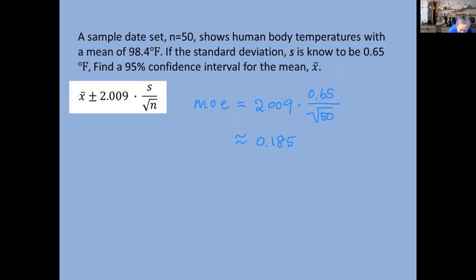What is the actual mean? 98.4, right. So now we are getting 98.4 plus minus the margin of error, 0.185. The confidence level will be, if you subtract, the lower bound is 98.215, and the upper bound will be, if added, 98.585. The mean is between them.